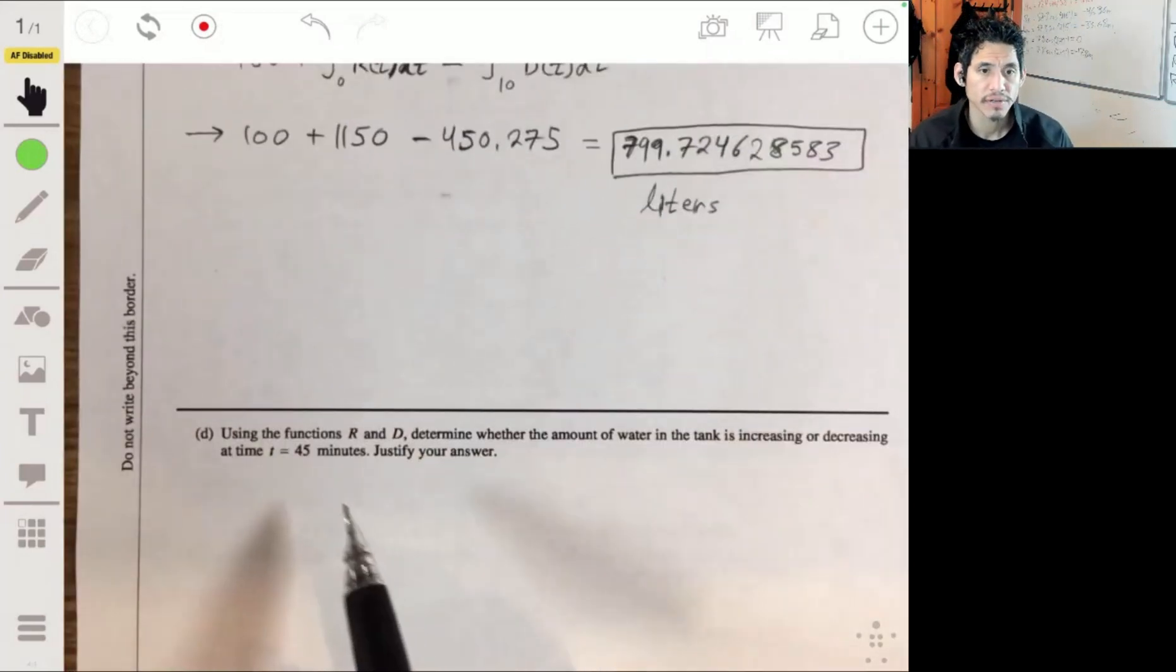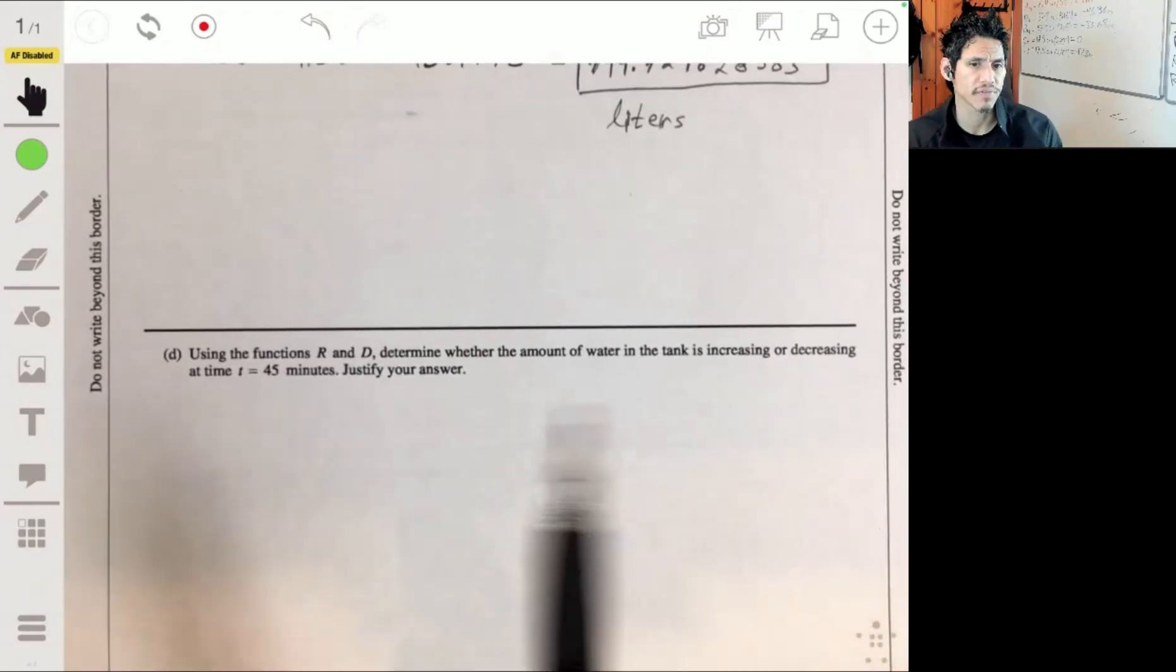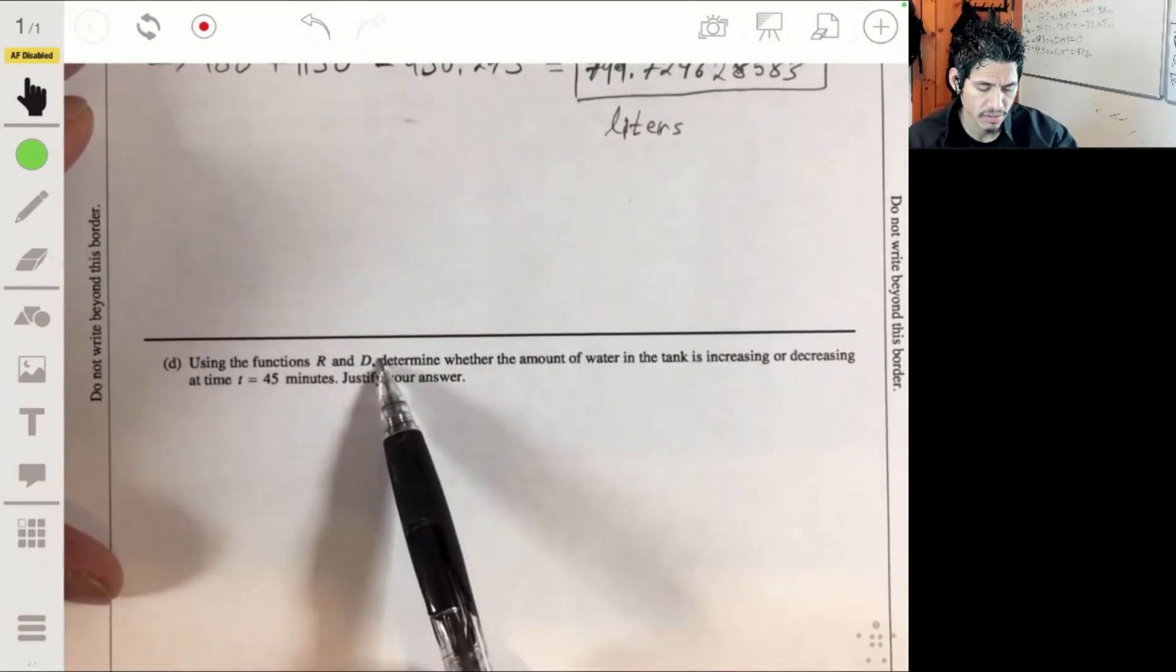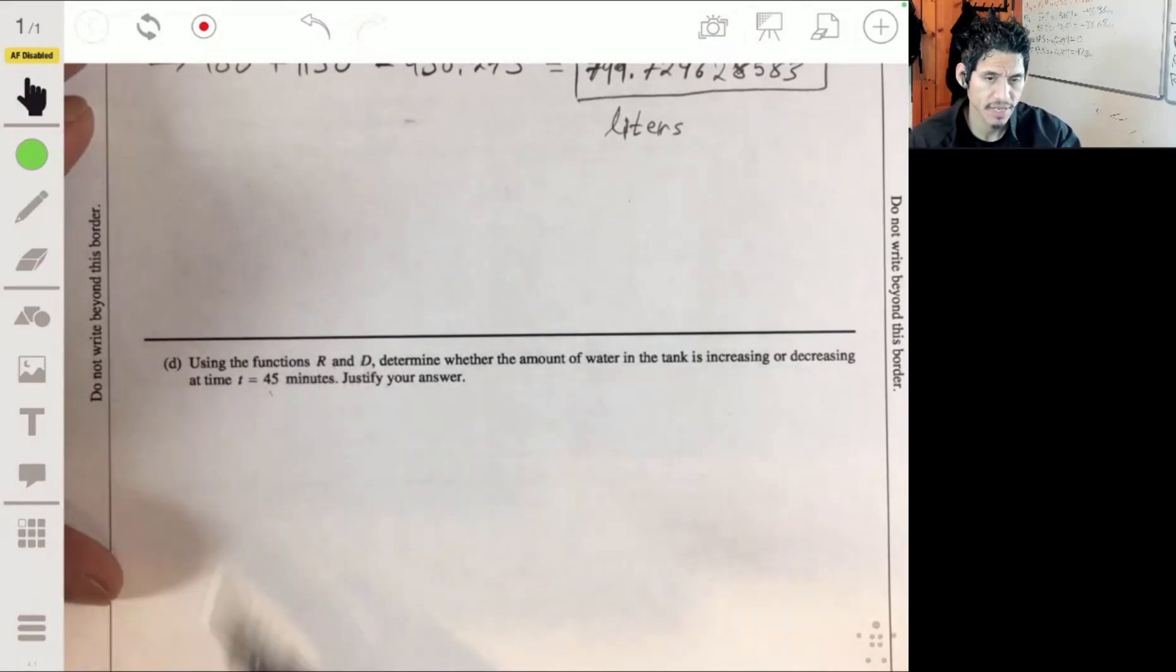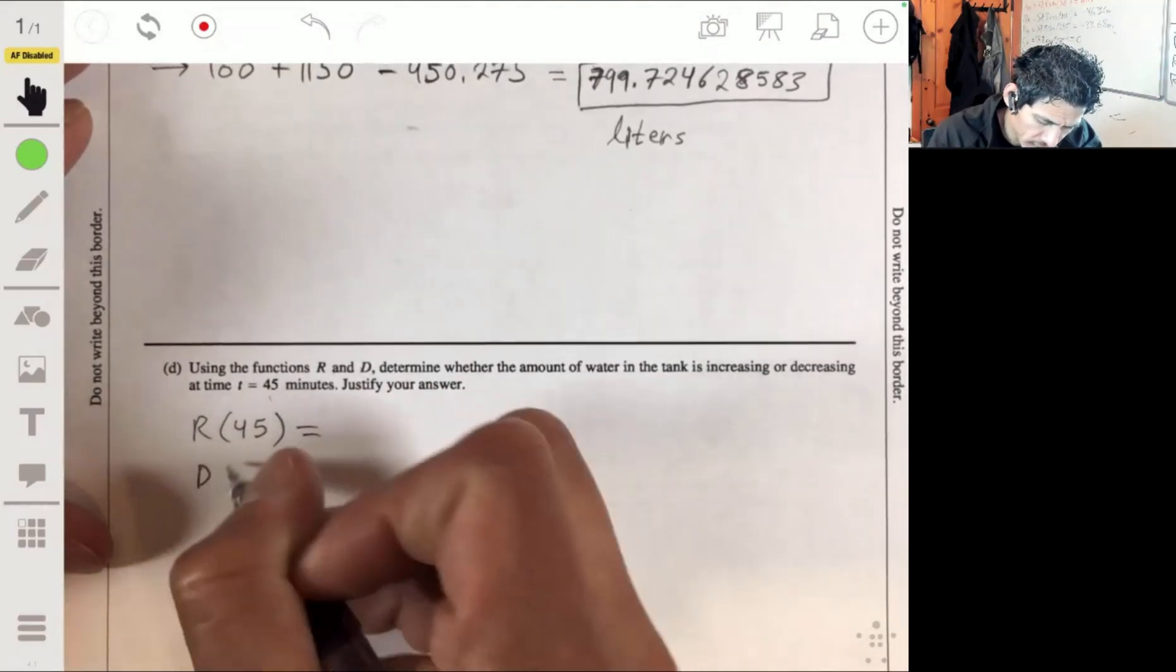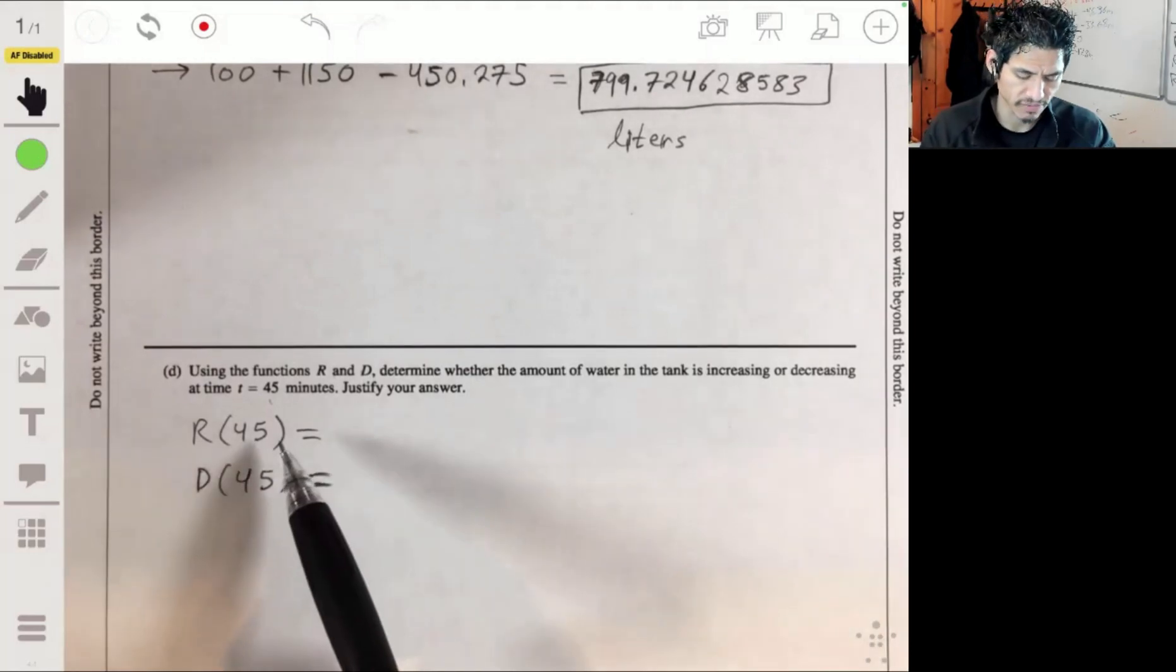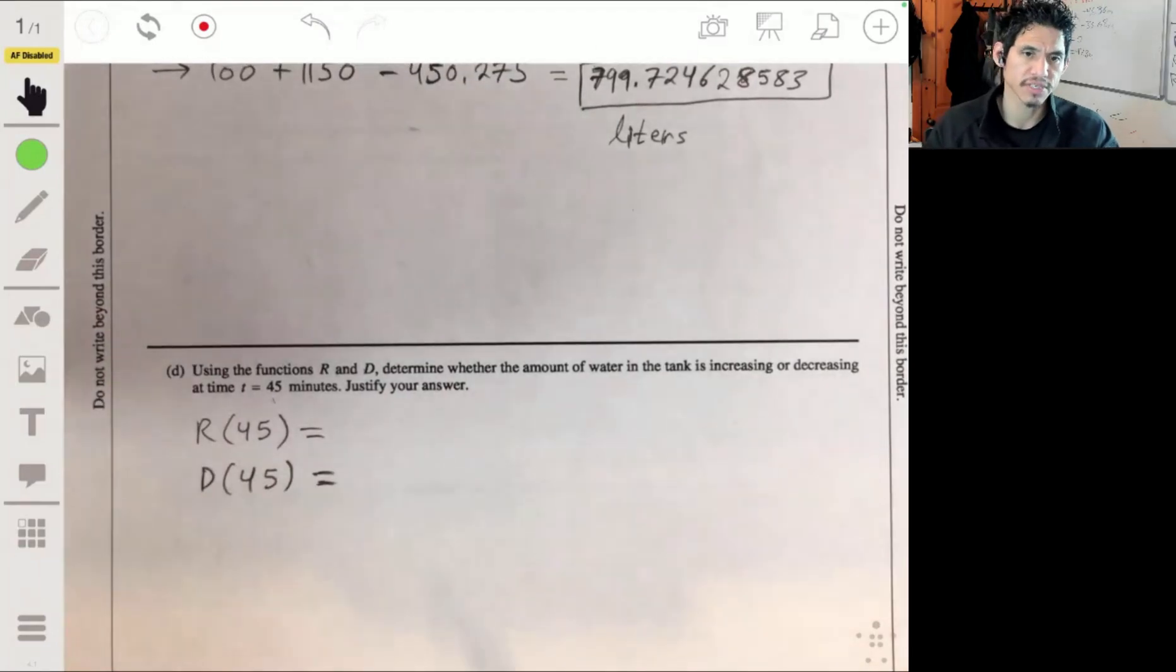Okay, so now last part we have: using the functions r and d, determine whether the amount of water in the tank is increasing or decreasing at time t=45. Okay, so r, remember, tells you how much water is coming in, d tells you how much water is going out. So you just have to see which one is larger at this time period. So we just calculate r(45) and d(45), and whichever one is bigger, that's the one that's going to tell you. If r(45) is bigger, it means the water is increasing. If d(45) is bigger, it means the water is decreasing.